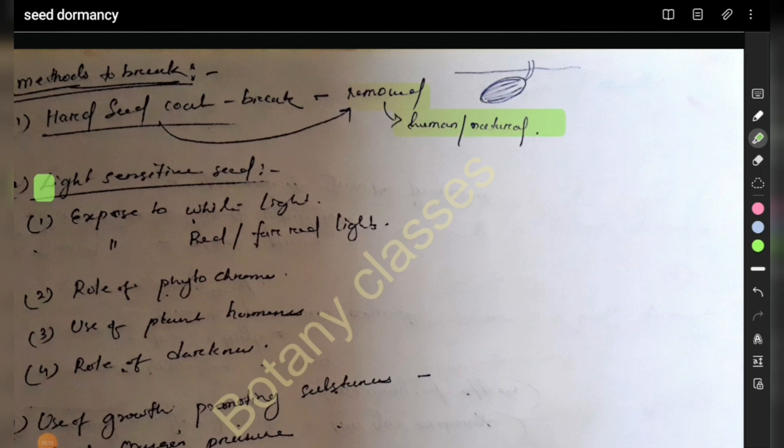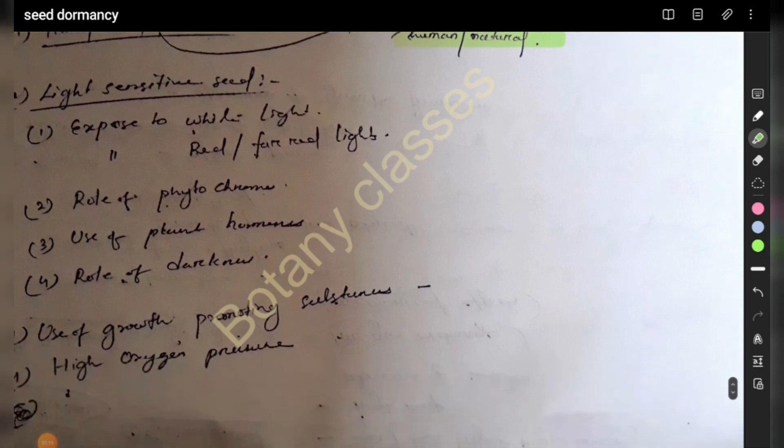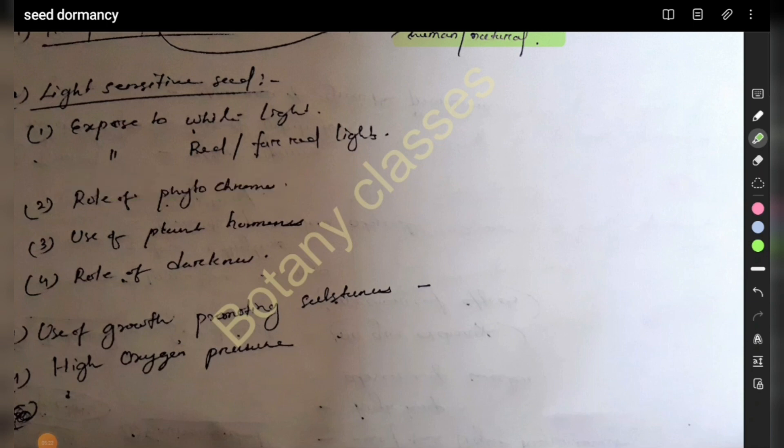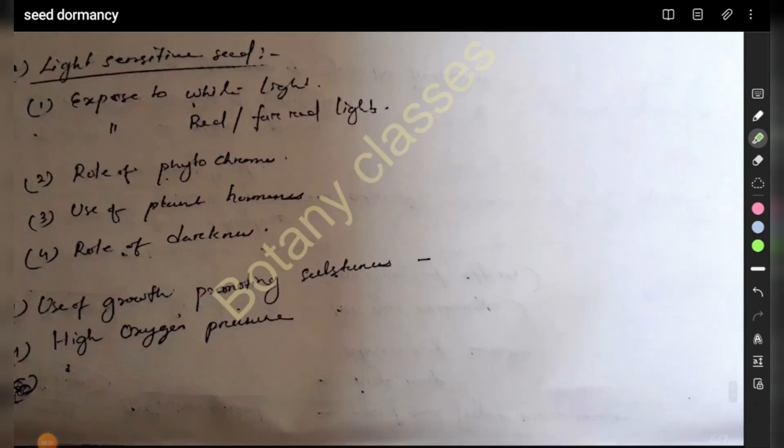Second, light-sensitive seeds can be exposed to light or infrared light, involving roles of phytochromes, use of plant hormones, and role of darkness.